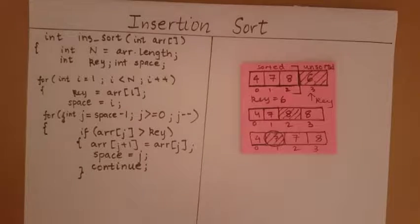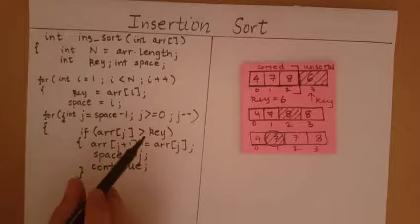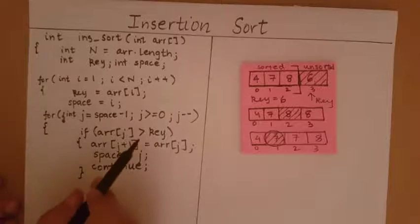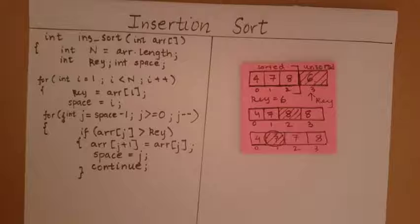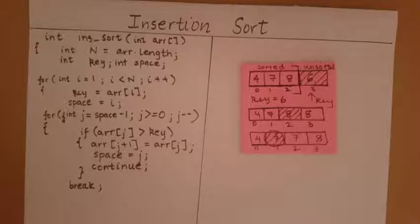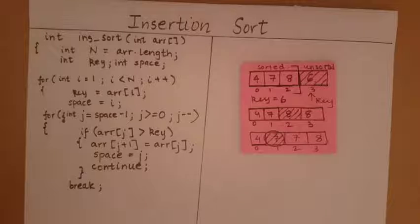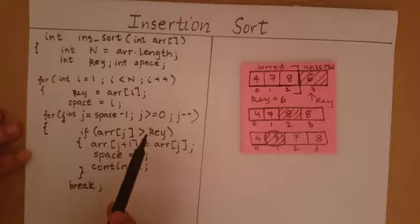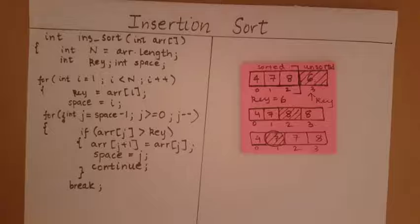Now what happens when this condition is not satisfied? This means that I have found an element in the sorted array which is less than our key. At this point I do not want to continue checking — I want to break from the loop, that is, stop shifting elements to the right. When I reach an element less than my key in the sorted array, I break from the loop because at this point I have found the correct position of the space, meaning the space has come to its correct position.